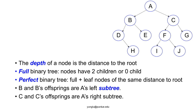If a binary tree is full, then a node has either two children or no child. A binary tree is perfect if it is a full tree and all leaf nodes have the same distance to the root. B is A's left child, and B and B's offspring are A's left subtree. C is A's right child, and C and C's offspring are A's right subtree.